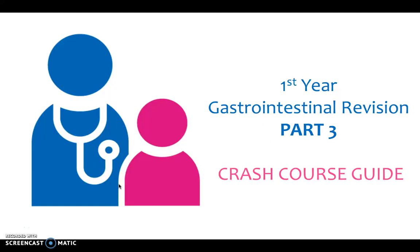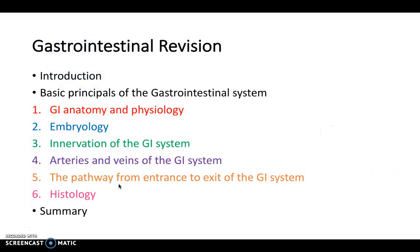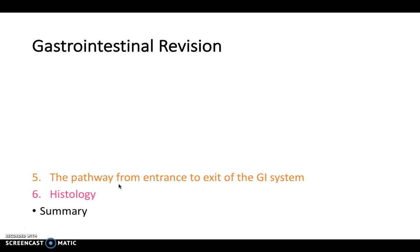Hello and welcome back to Crash Course. Today we're going to be looking at part three of the gastrointestinal system. In parts one and two we looked at the anatomy, physiology, embryology, innervation and vasculature of the GI system. In this video we're going to be looking at the pathway of the GI system from entrance to exit and also having a look at the histology. We'll finish with some MCQs.